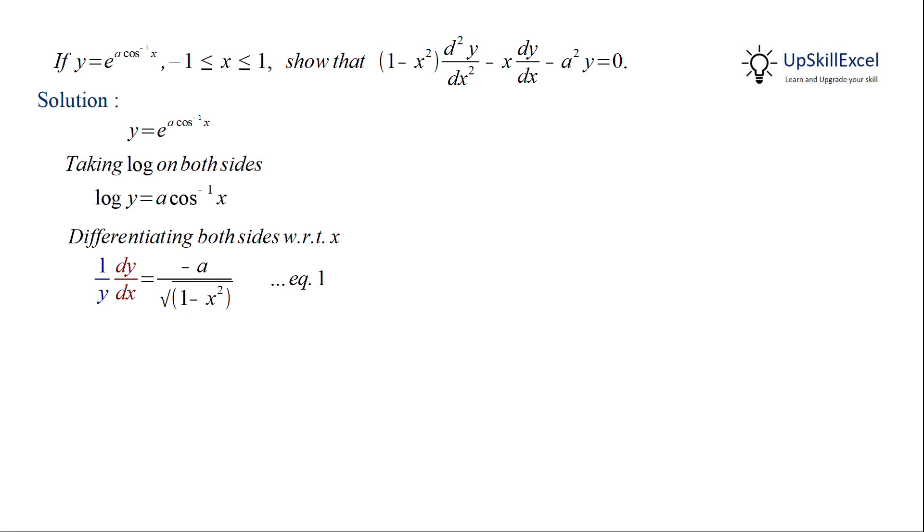As we need the second level derivative, we can differentiate this equation. On the left hand side we have the product of 1 upon y and dy by dx, so we will apply the product rule. For the right hand side we will apply the chain rule as it is a composite function of square root and 1 minus x square.